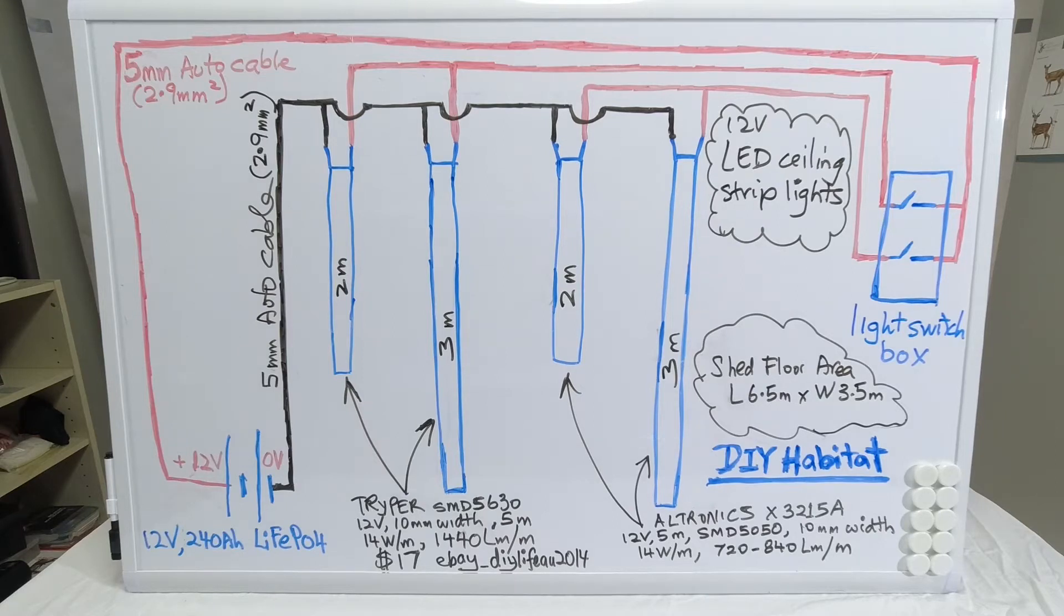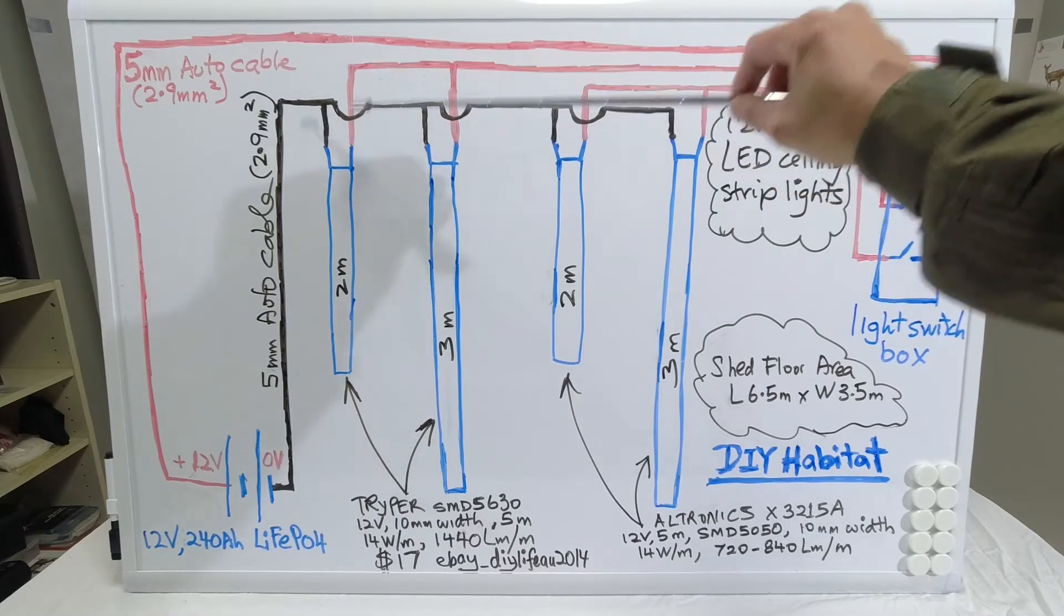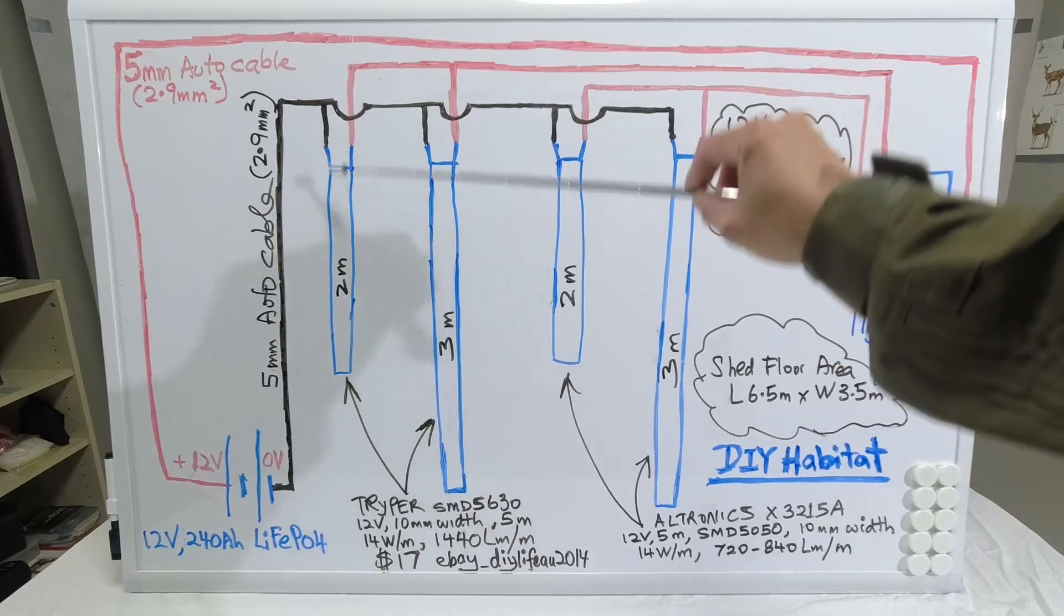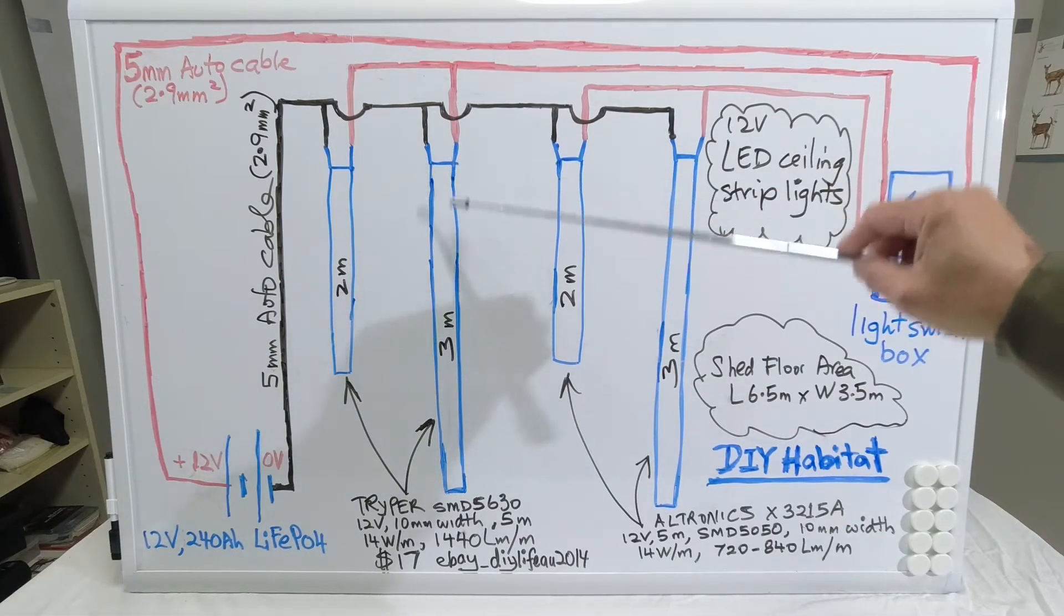So if we go back to the positive circuit, when I close the circuit, if I close switch one, it provides current to these two sets of LED lights.